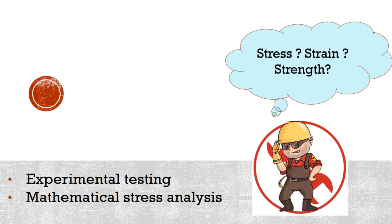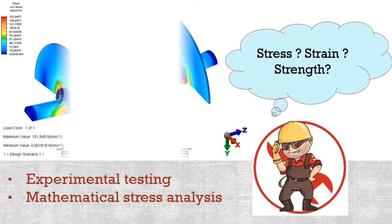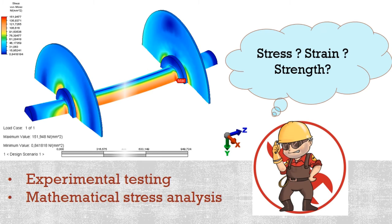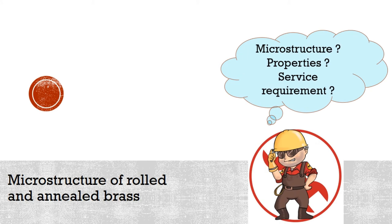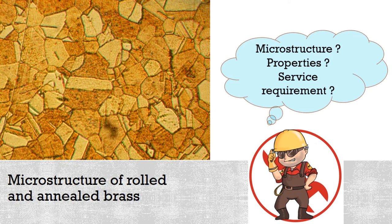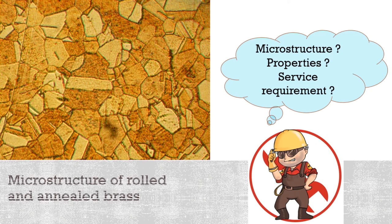If you are a structural engineer, your role is to determine stress and strain distribution within members that are subjected to well-defined loads. This may be accomplished by experimental testing techniques and/or by mathematical stress analysis. Materials and metallurgical engineers, on the other hand, are concerned with producing and fabricating materials to meet service requirements. This may involve an understanding of the relationship between the macrostructure of materials and their mechanical properties.